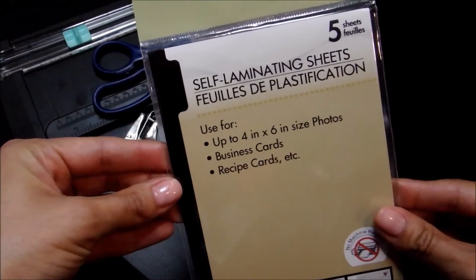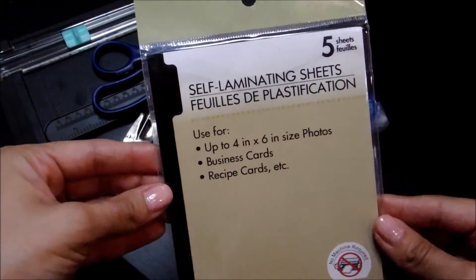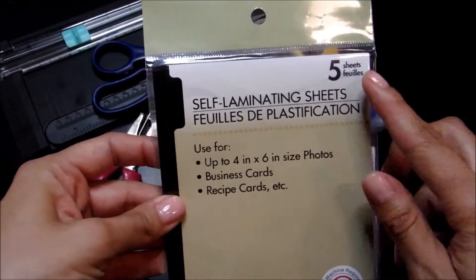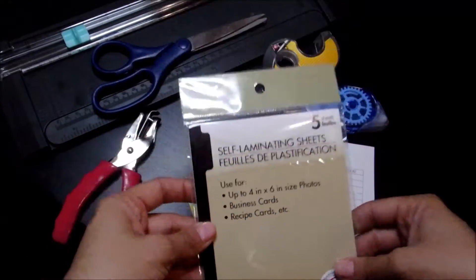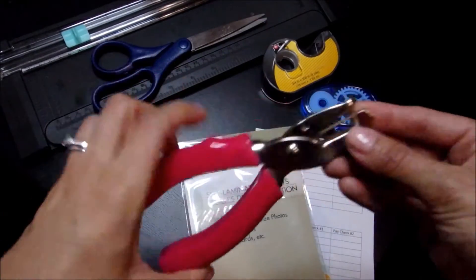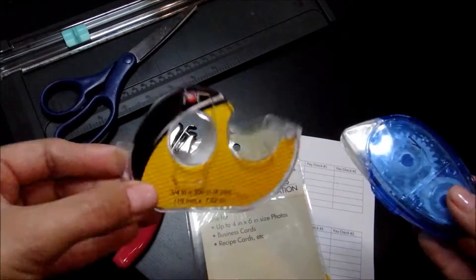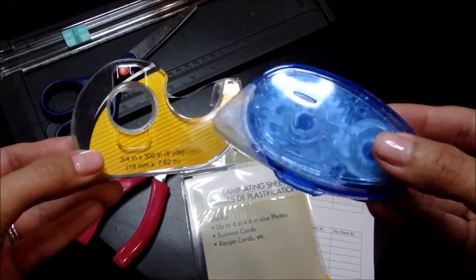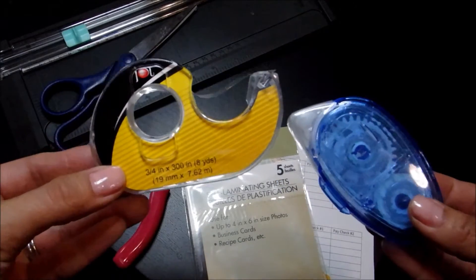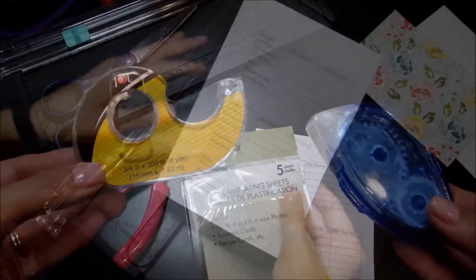You'll need the self-laminating sheets. I only used one so technically you only need one of these but they come in packages of five. You do need a punch hole, you need either a pair of scissors or a cutting board. You also need double-sided tape or a tape roller, whichever works best for you, whatever you have at hand. Even regular tape would work just fine.